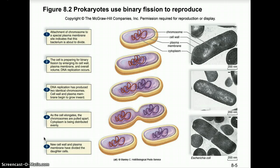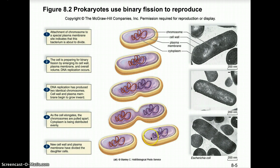After the chromosome is replicated, the cell wall and plasma membrane begin to grow inward, causing the cell to elongate. The cytoplasm then starts to pinch inward — this is cytokinesis. At the end of binary fission each new cell has a new cell wall, a new plasma membrane, and contains a copy of that circular chromosome.